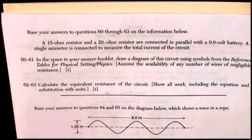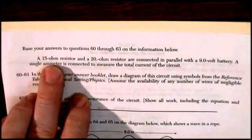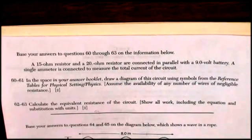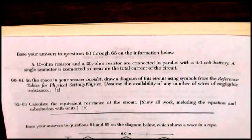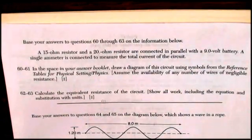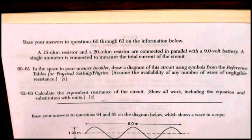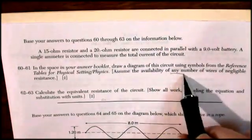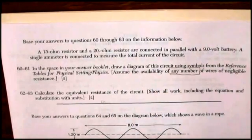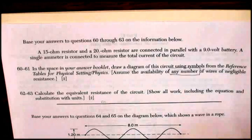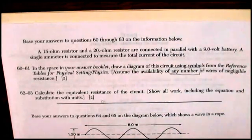60 and 61 start off with a circuit, a 15 ohm resistor and a 20 ohm resistor connected in parallel with a 9-volt battery. A single ammeter is connected to measure the total current of the circuit. For two points, they want you, in this answer booklet, draw a diagram of this circuit using symbols from the reference table for physical settings. Assume the availability of any number of wires. You can get in so much trouble by saying that, because you could draw a pretty hairy circuit using any number of wires. But let's go with a simple one, and they have negligible resistance.